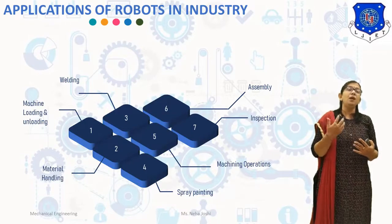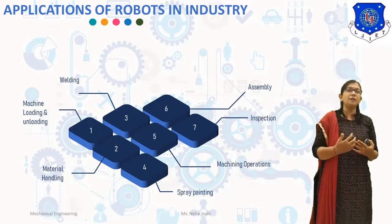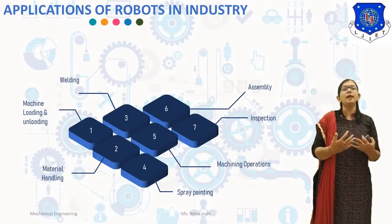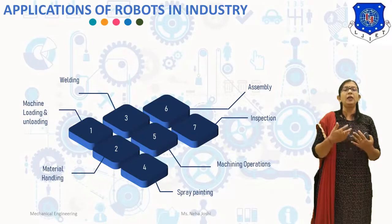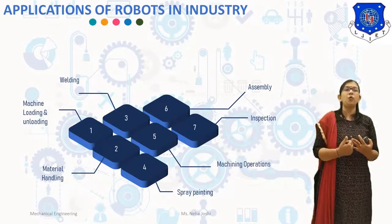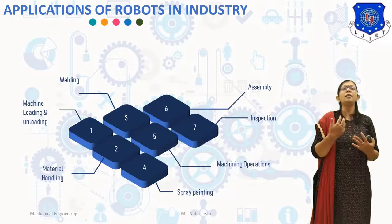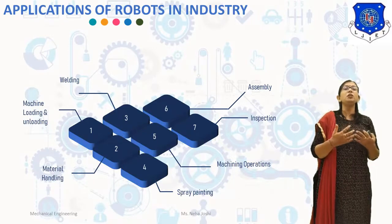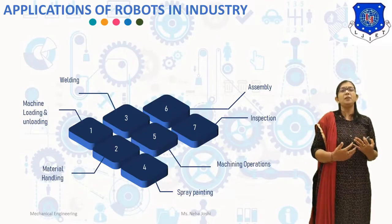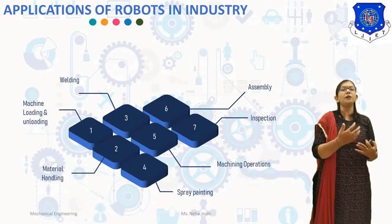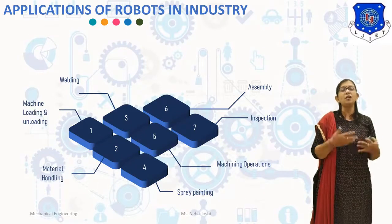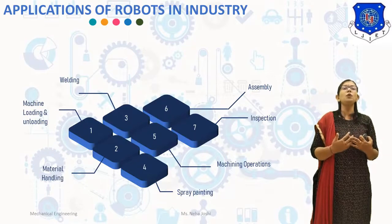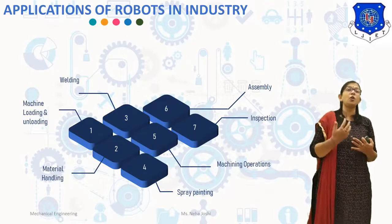The next application is assembly. In assembly, two or more components are joined to form a new entity. Assembly normally involves operations like mechanical fastening, soldering, greasing, welding, press fitting, and adhesive bonding. Assembly involves highly repetitive and boring operations which lead to human fatigue, adversely affecting product quality and productivity. The use of robots in assembly results in reduction in manufacturing costs and improved productivity. The most common configuration used in assembly is the SCARA robot.